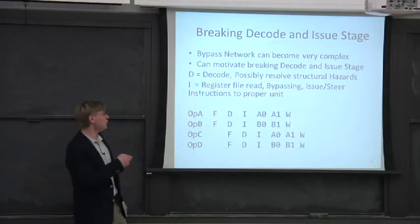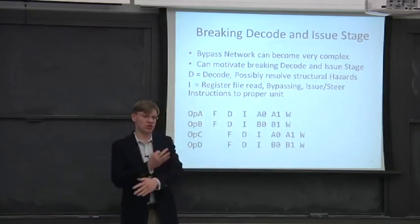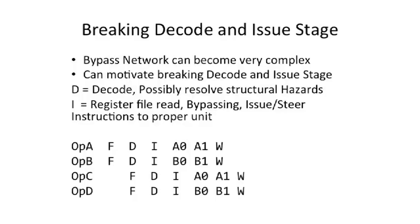And then in the issue stage, I for issue, you'll do the register file and you'll probably swizzle or cross over or steer the instructions and the operands to the correct location. And of course, you'll do this bypassing if you have lots of bypassing operands coming back. So to give us a brief pipeline example here, here we have two cycles, each that execute two instructions per cycle. And we can see now our pipeline has an extra I in here, which is just an extra front-end stage.